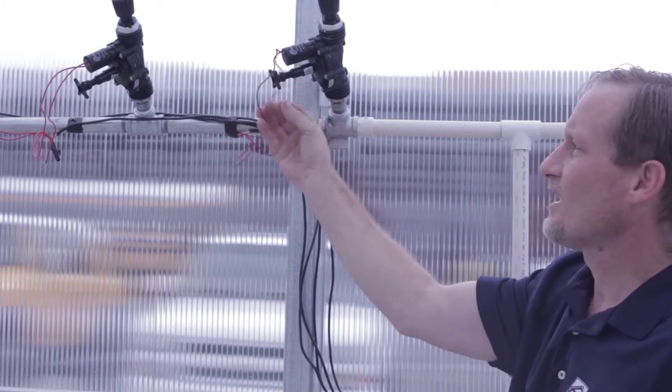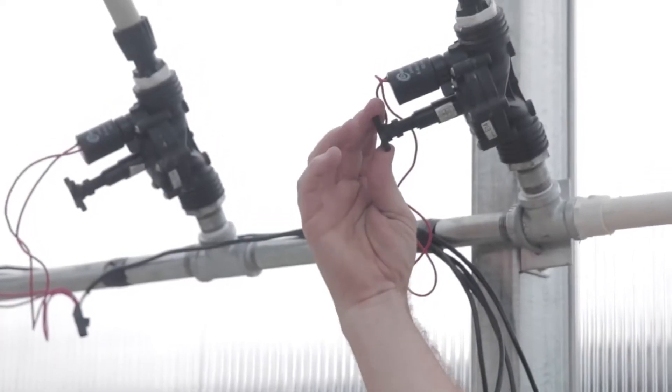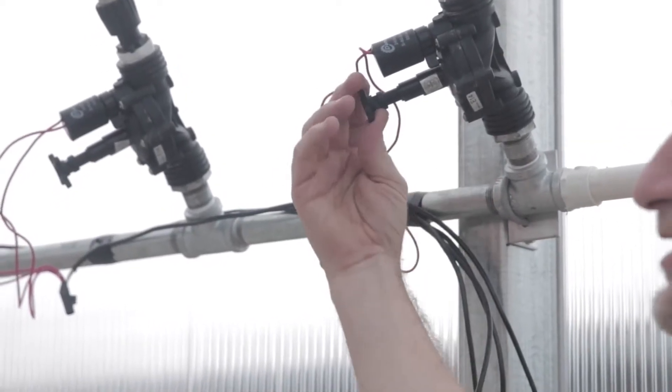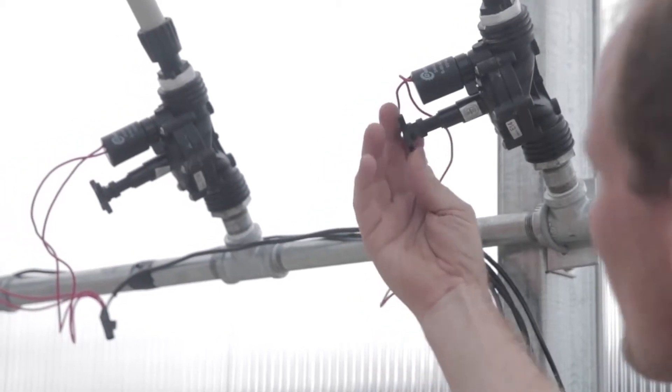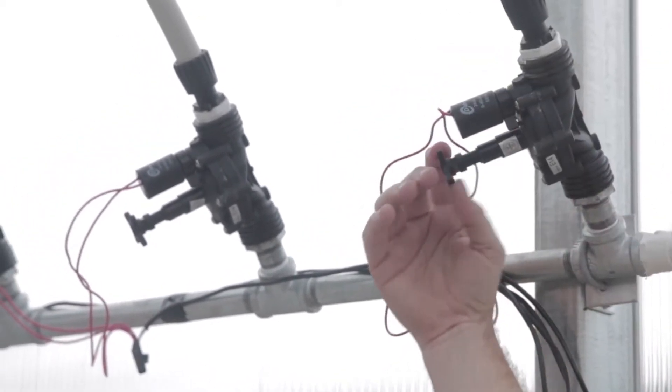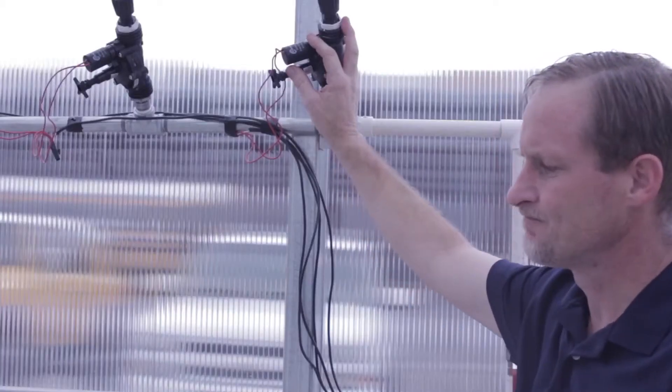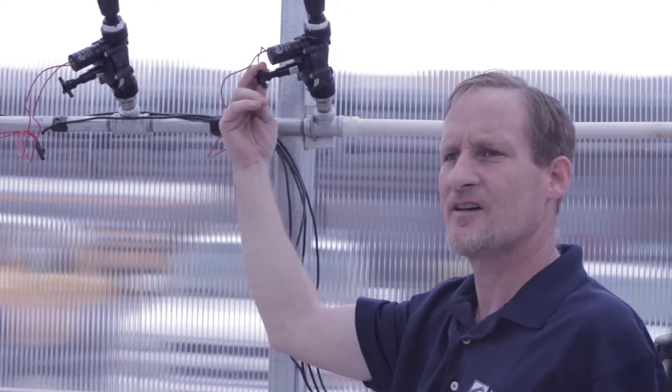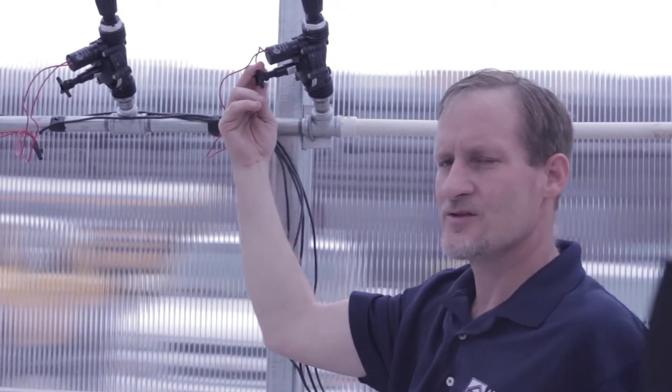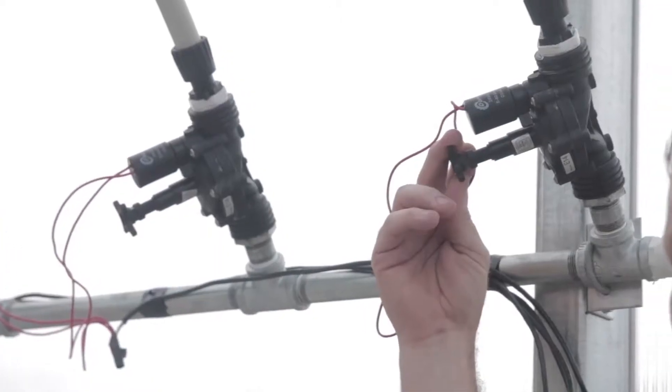It also has a regulator valve. This regulator valve always needs to be in the open position which is screwed all the way out or counterclockwise. This is oftentimes a problem for systems where someone's come and turned your regulator down and that's why your misters or drip irrigation is not operating properly.